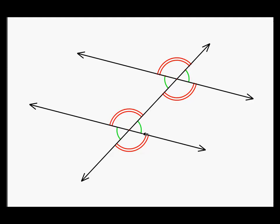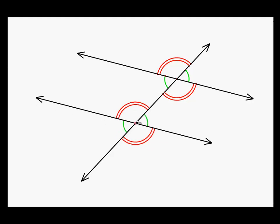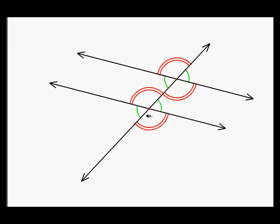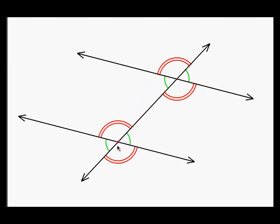Now the neat thing is, if we could take one of these two parallel lines and slide it along this transversal so that the parallel lines were on top of each other — notice that the angles have the same measures. So all four of these angles that are marked with the green arcs have the same measure.